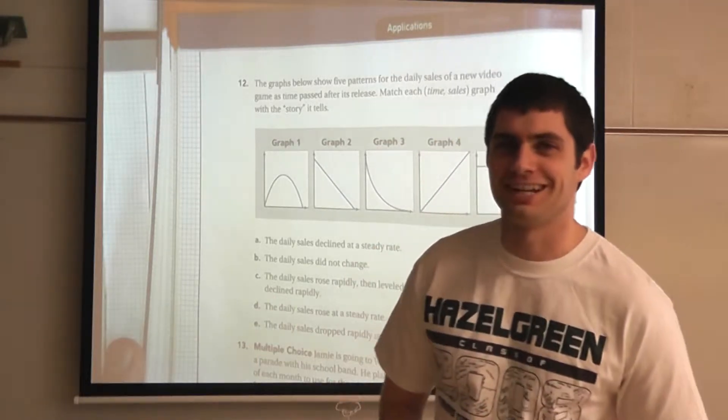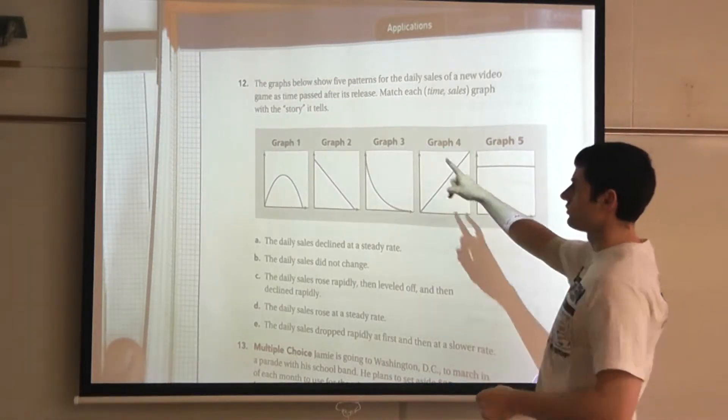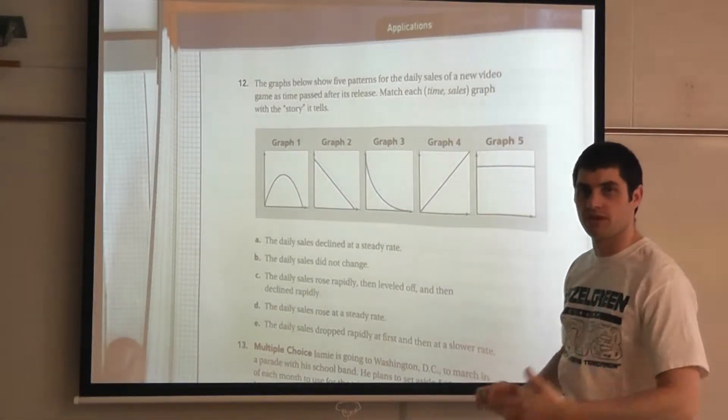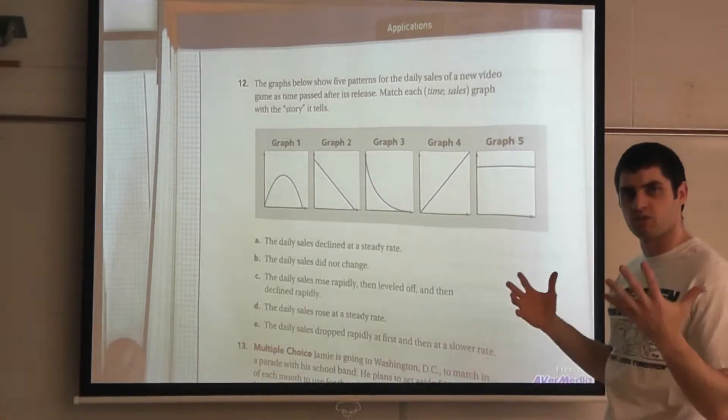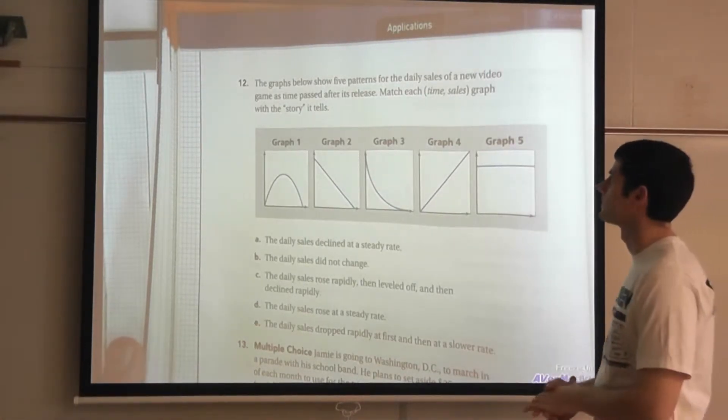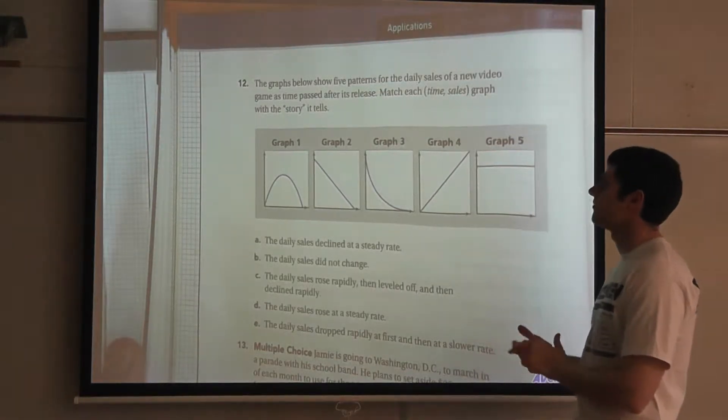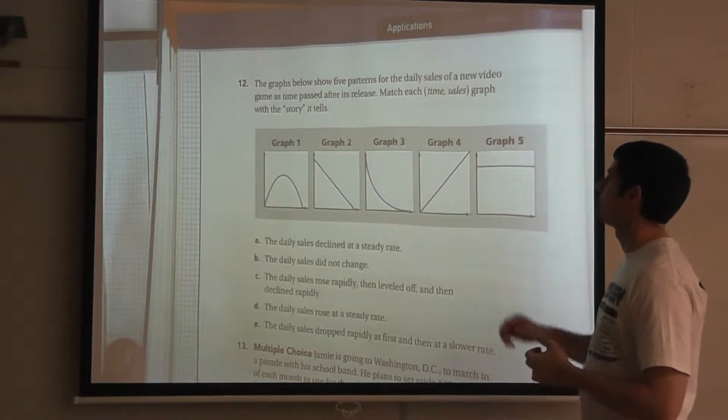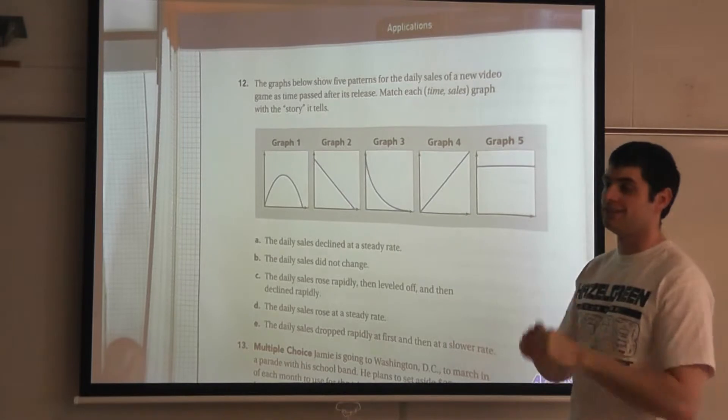Let's take a look at an example problem up here and how to interpret graphs. This is actually problem 12 from your CMP homework in investigation 2. And we're going to take a look at exactly what it means to interpret graphs. The graphs below show five patterns for the daily sales of a new video game as time passed after its release.